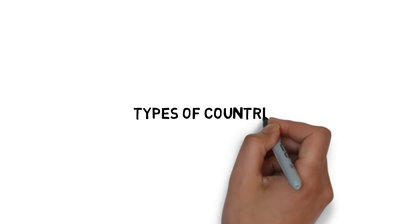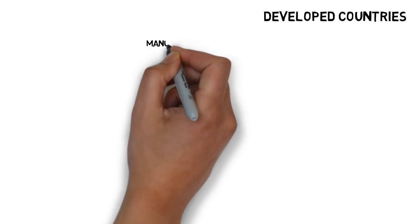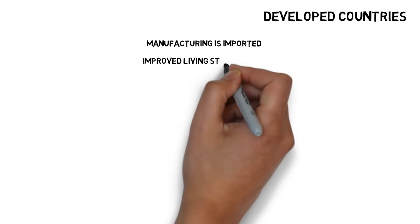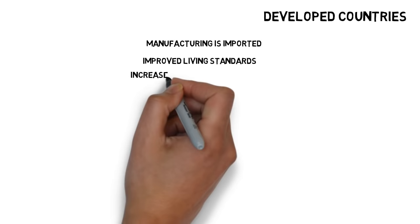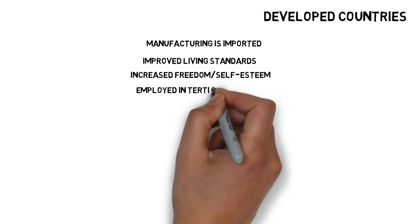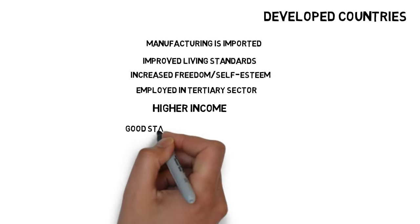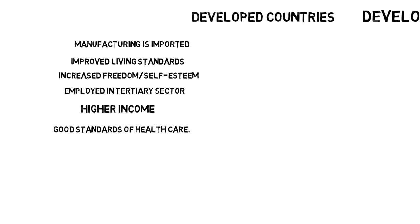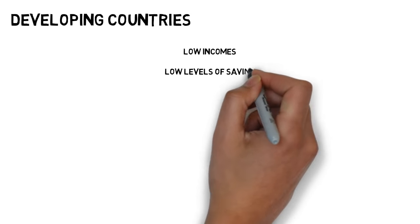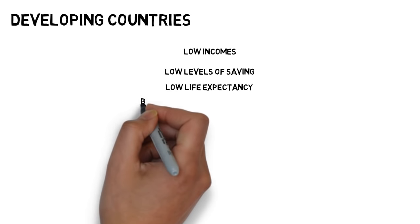Let's talk about types of countries. There are two different types: developed countries and developing countries. Developed countries are those where manufacturing is conducted with high standards. They have improved living standards, reduced poverty, a wide range of economic and social choices, and increased freedom. A high number of people are employed in the Tertiary sector, with higher levels of productivity and investment. People in these economies have higher incomes and good standards of health care. Developing countries, on the other hand, have low incomes — generally people there are poorer than in developed countries.